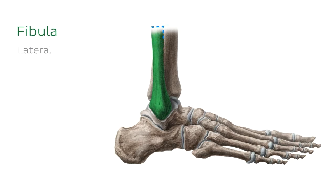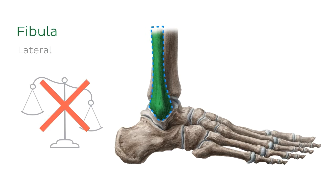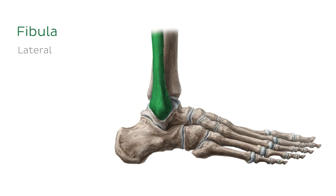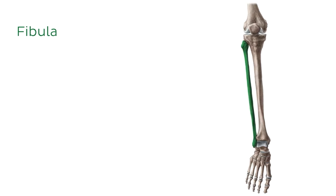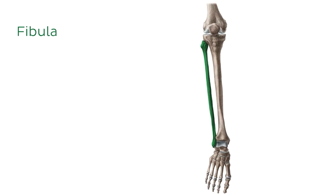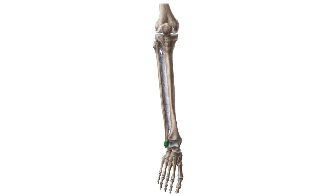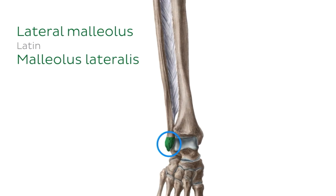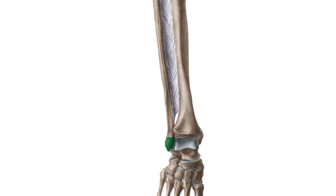This is the lateral view of the right ankle. The fibula is much more slender than the tibia. While the fibula is not directly involved in weight transmission, it is involved in the ankle joint. Similar to the tibia, the fibula also has a distal bony projection or malleolus. Since we're on the lateral side, this one is called the lateral malleolus. You can see it here in this anterior view of the ankle. You can pause this tutorial to try to palpate this structure on yourself.